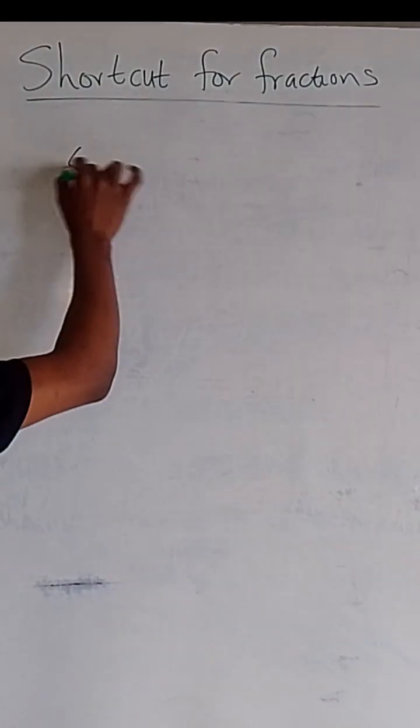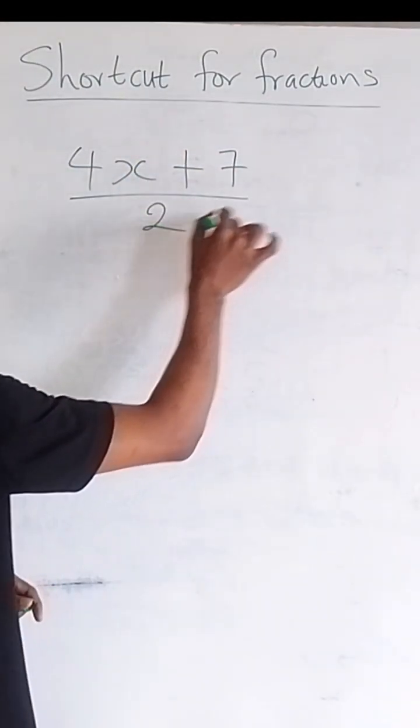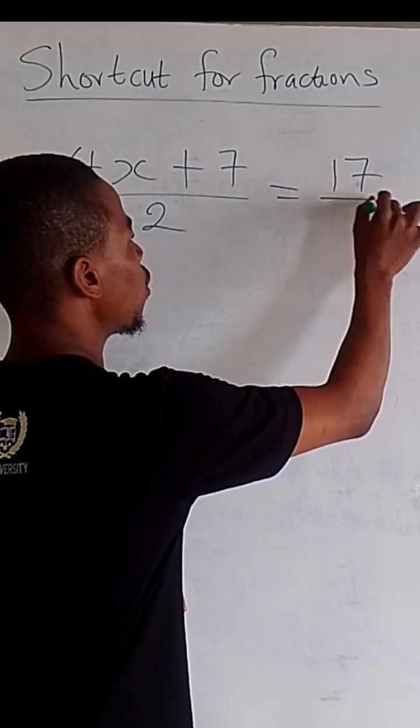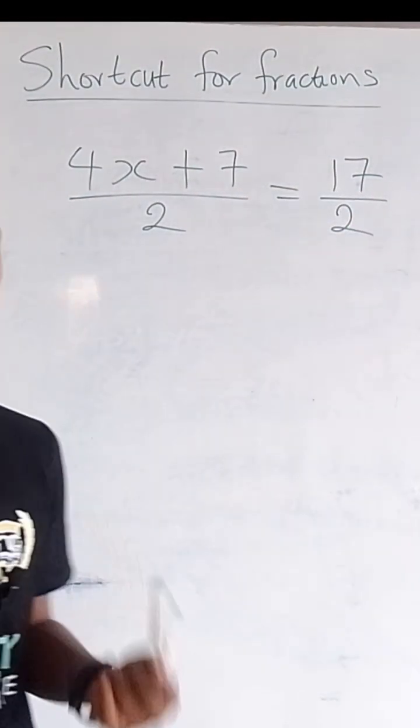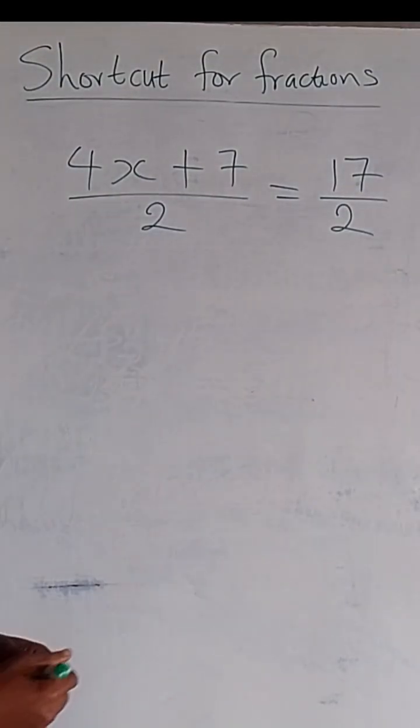For example, if you have, let's say, 4x plus 7 all over 2 equal to 17 over 2. A regular student would simply cross-multiply and then start solving, right? But there's a shortcut here.